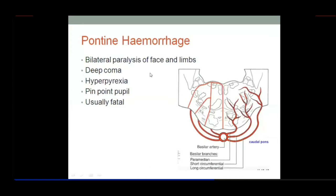First, we will study pontine hemorrhage. Pontine hemorrhage refers to hemorrhage of the basilar artery or the different pontine branches which supply the pons. If any of these vessels undergo hemorrhage, what will be the consequences?